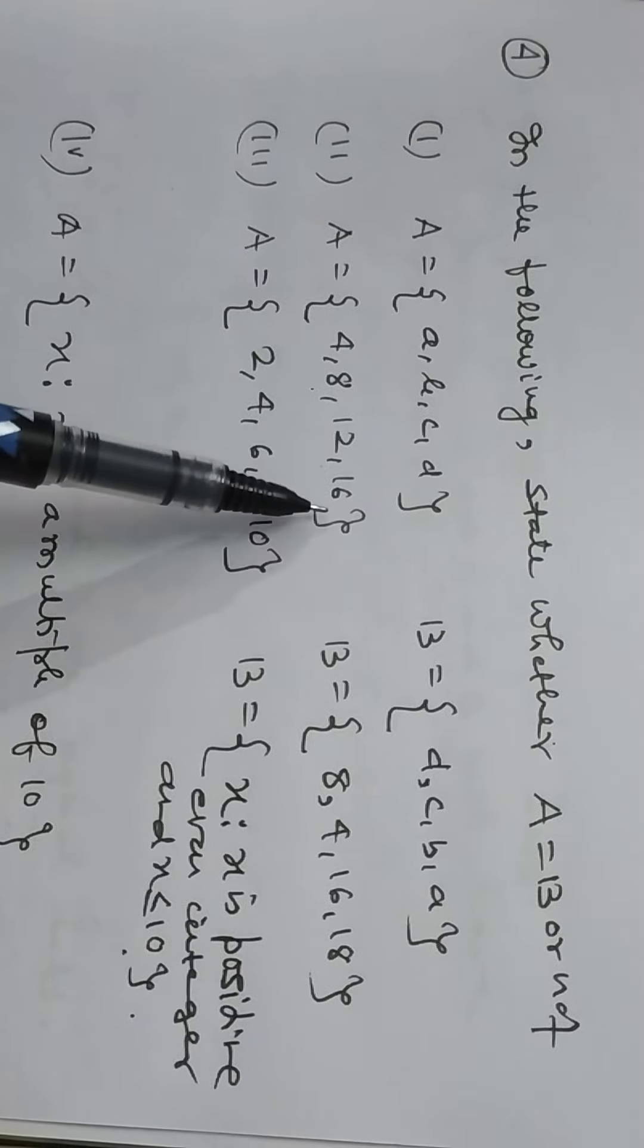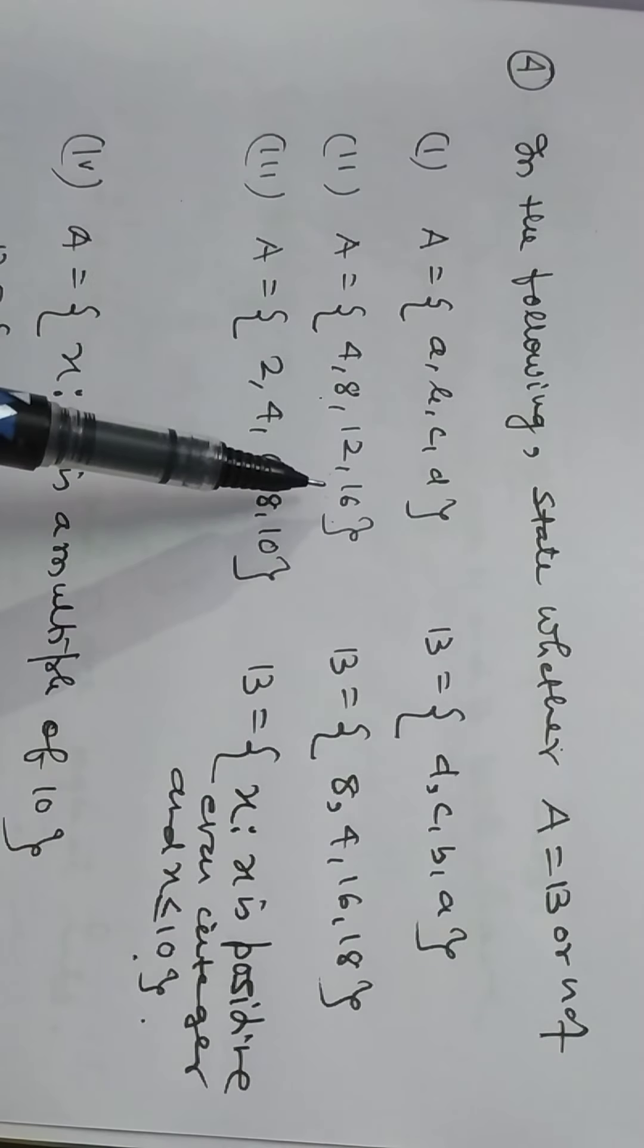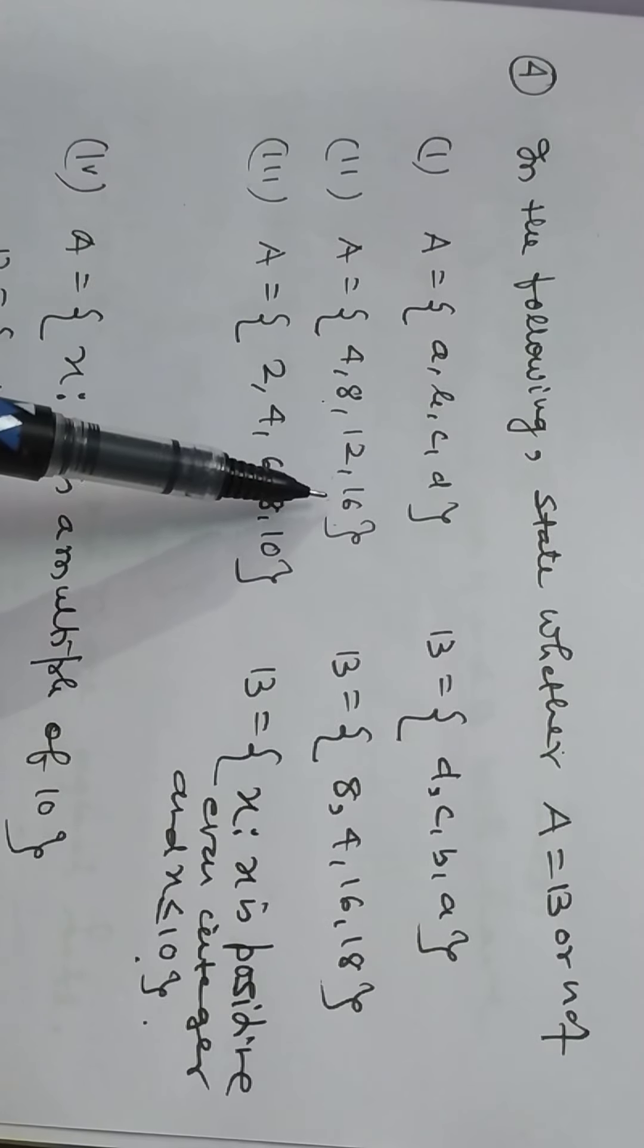4, 8, 12, 60. Cardinal number are equal, but elements are not the same, so it is not equal set.